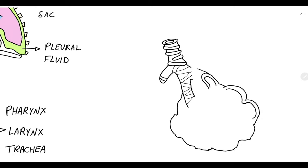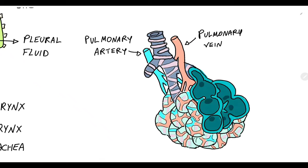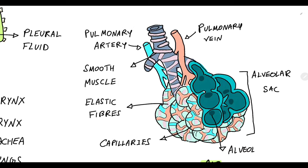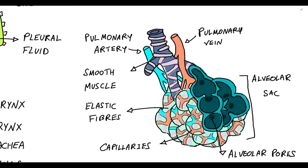Taking a closer look at the alveoli, the bronchioles are lined by smooth muscles that maintain airway patency. The pulmonary artery subdivides and makes up the alveolar capillaries. After gas exchange, the oxygenated blood is carried back into the heart via the pulmonary vein. The alveoli also contain elastic cartilage that helps in passive recoil during expiration. The alveolar pores also allow communication between two adjacent alveoli.